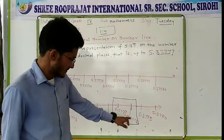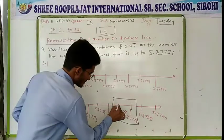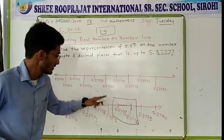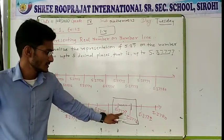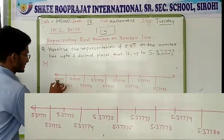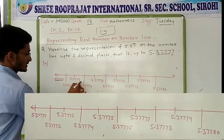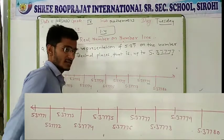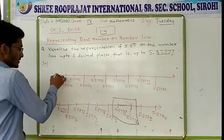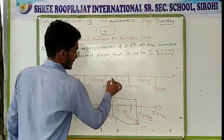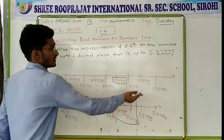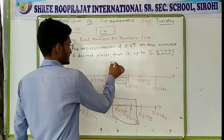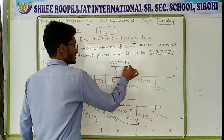So if we zoom this part, as we know there are 10 equal parts. After zooming, after 5.3777 you will get 1, 2, 3, 4, 5, 6, 7, 8, 9, and 5.3778. What we need is 5.37777 — that is 3 and 4 times 7. So starting from 1 — 2, 3, 4, 5, 6 — and that is your answer: 5.37777.